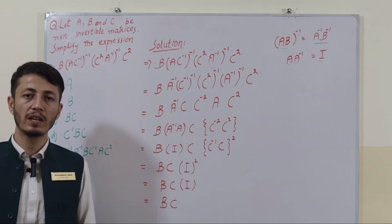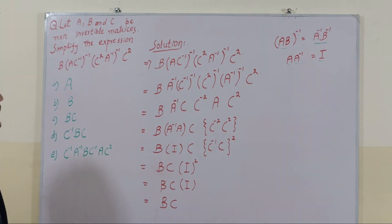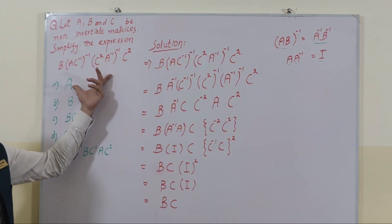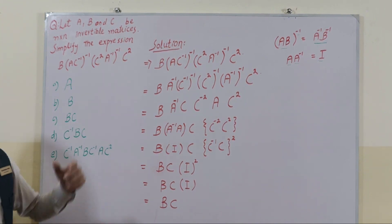Today's question is from linear algebra. The question is: let A, B and C be n cross n invertible matrices, then simplify the following expression. So what will be the possible answer for this expression?